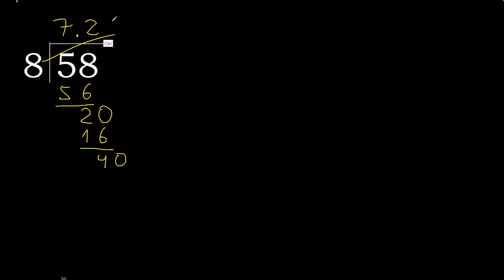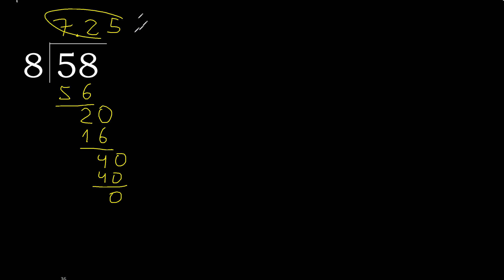Now 40. 8 multiplied by 5 is 40. Subtract 0 — remainder is 0, therefore finish. 58 divided by 8 equals 7.25.